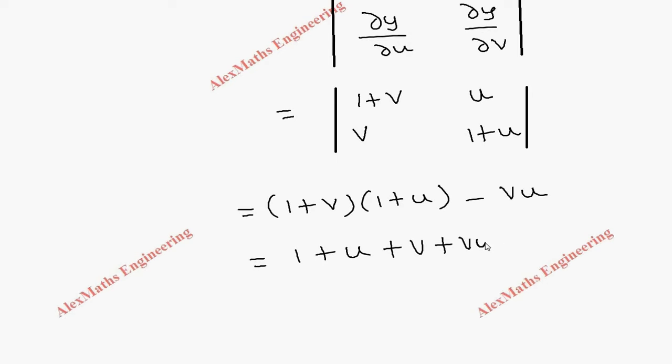We can cancel +vu and -vu, and finally we're left with 1+u+v.